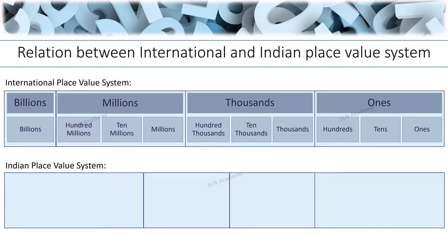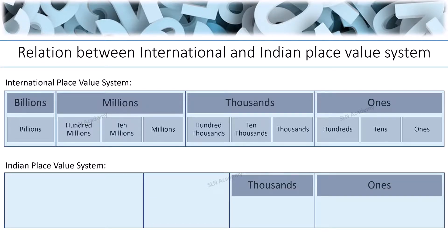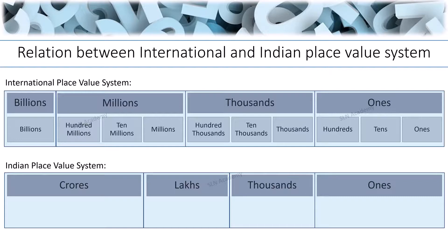In the Indian place value system, ones, thousands, lakhs, and crores are the different periods. The ones period is divided into ones, tens, and hundreds.